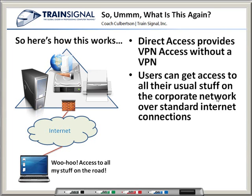With Direct Access, we can set up a user's machine so they can have access to all their usual stuff on the corporate network over standard internet connections from more or less anywhere in the world. That's super keen from the user standpoint. When a user connects to an internet connection — say in a Starbucks or Panera Bread or wherever they may be — all the corporate resources show up as native elements of the machine, just like as if they were sitting at corporate headquarters. They're going to have a very easy experience accessing stuff back on the corporate network pretty much anywhere in the world, and they're not going to have to mess around with logging into a VPN.